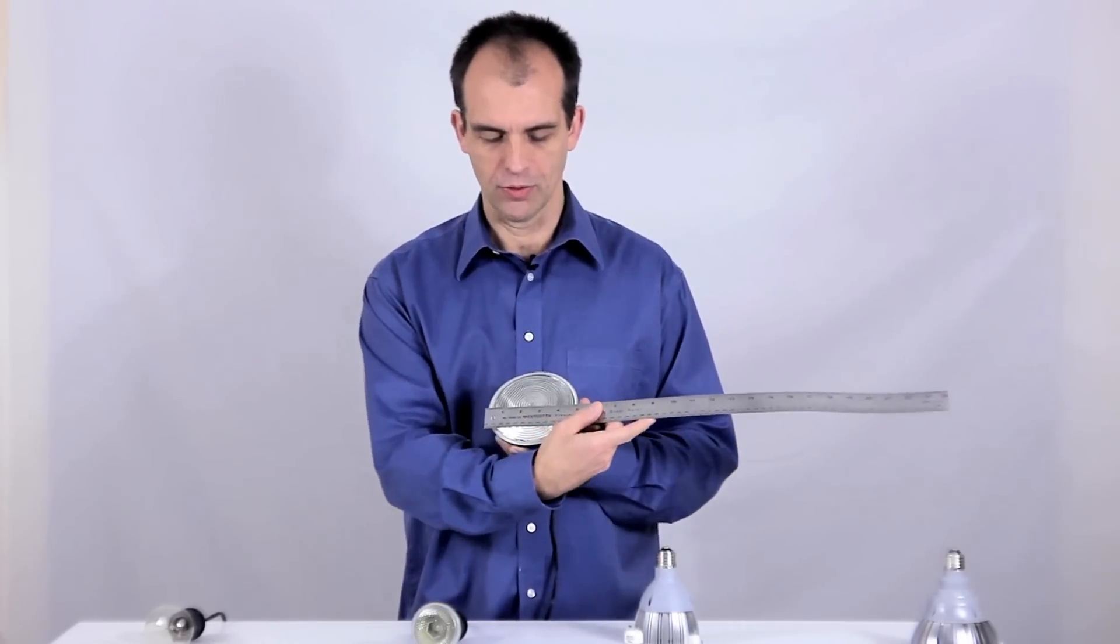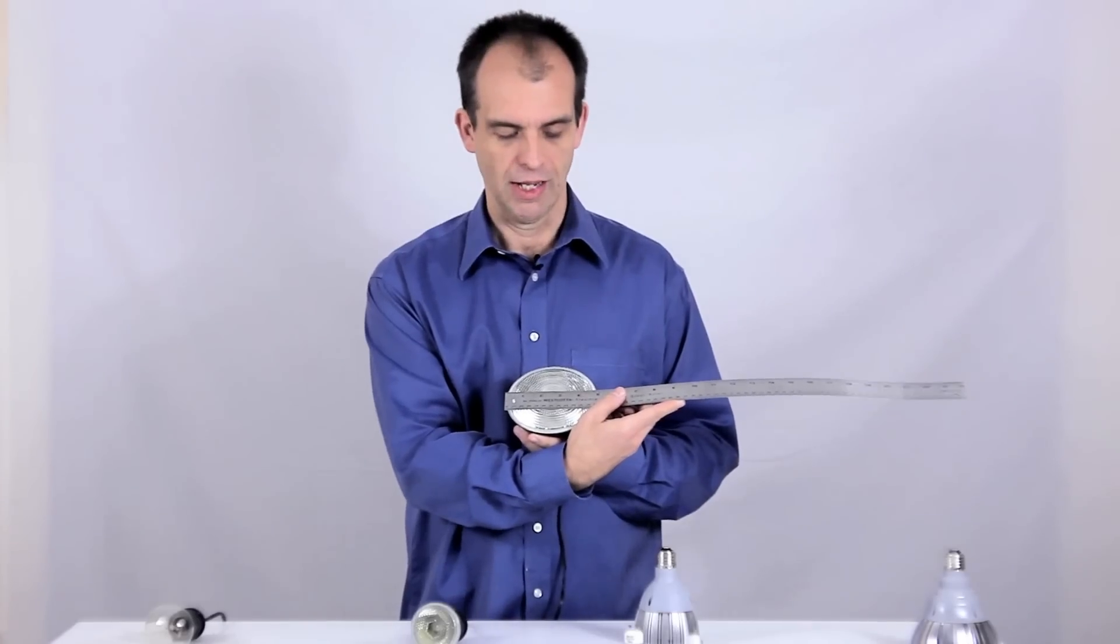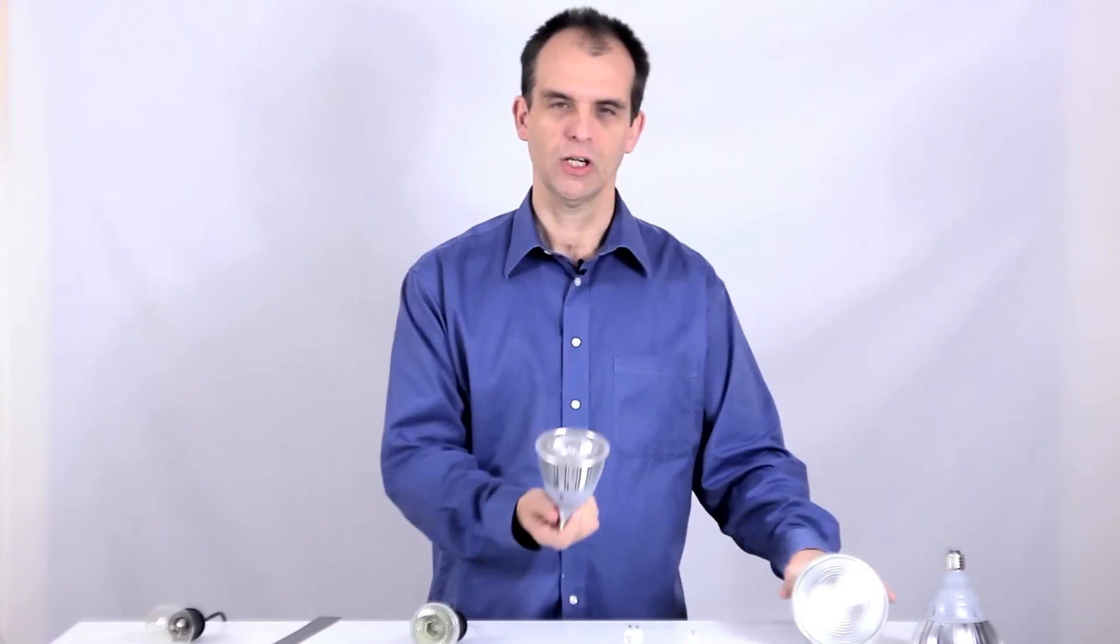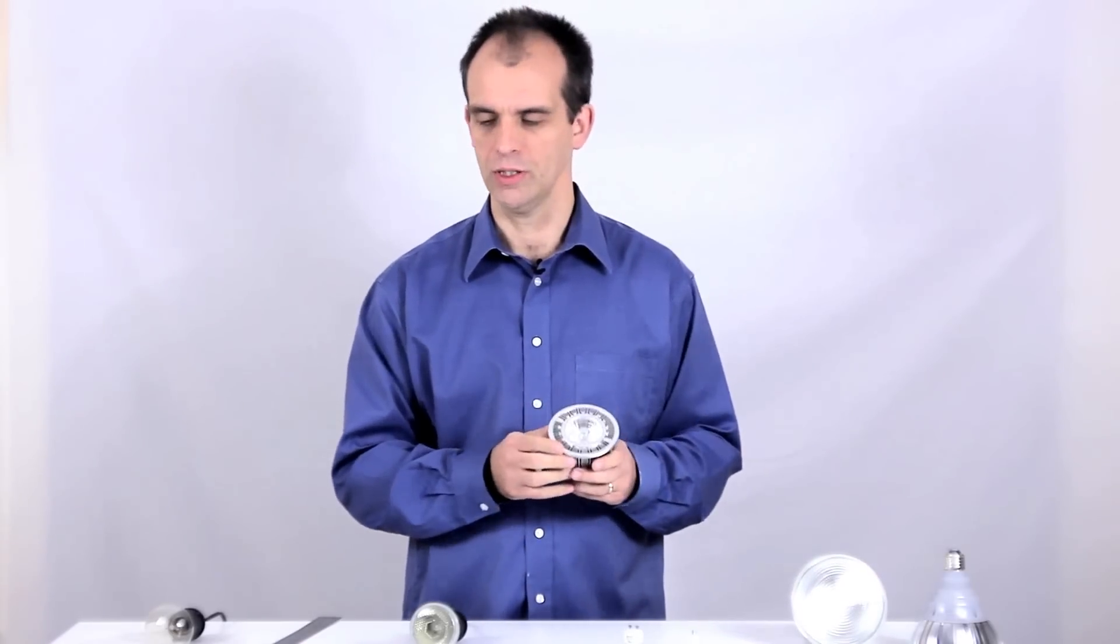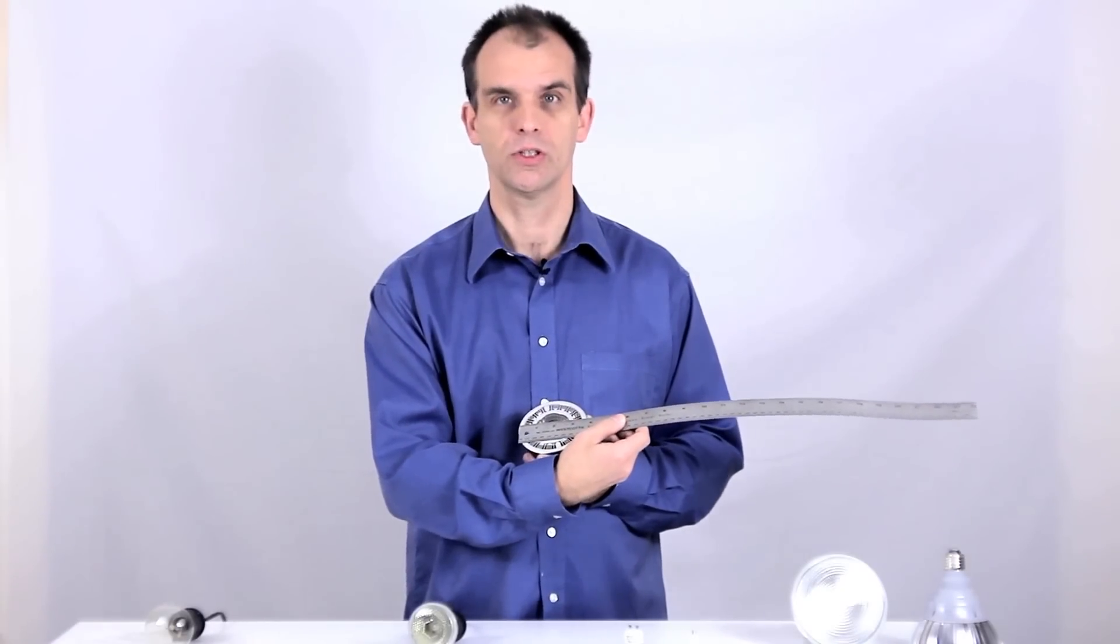So, now here we have the PAR-38. And the 38 is 4 and 3 quarter inches. And that is 38 eighths of an inch. Here's our LED version of the PAR-30. And it's 3 and 3 quarter inches. So, it's 30 eighths of an inch.